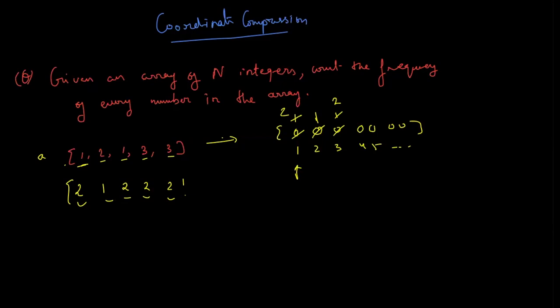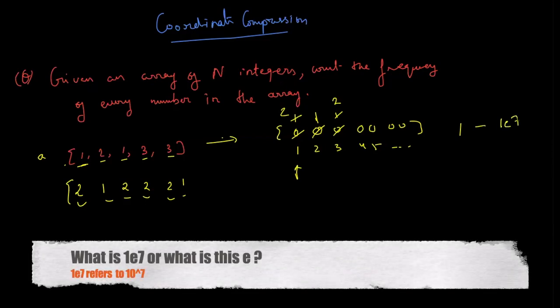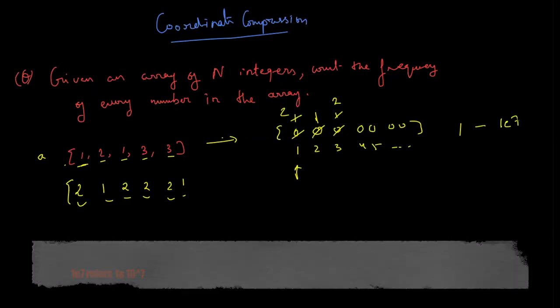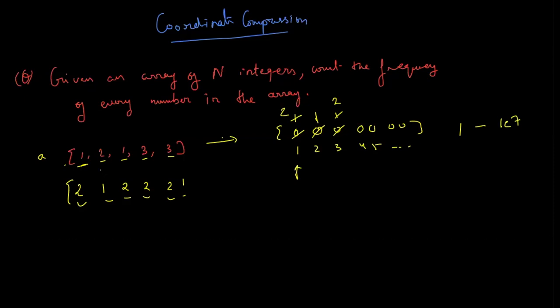So I ask you a question, till when can you use this array to count? If your numbers are in the range from 1 to 1e7 because we know at max we can have sizes of 1e7 or little bit more than that. But then if the numbers in the array would be of the range something like 10 to the power 17 or 10 to the power 18 or 10 to the power 9,